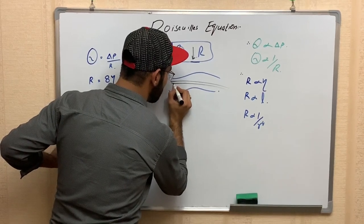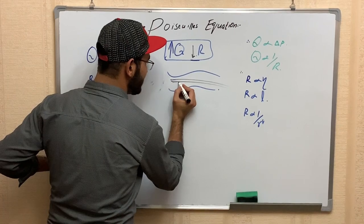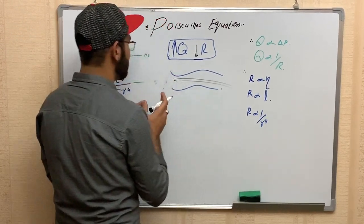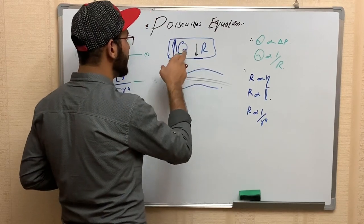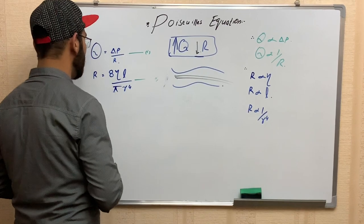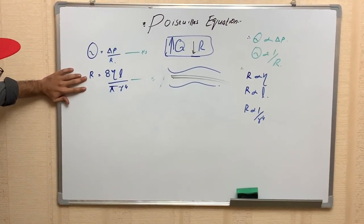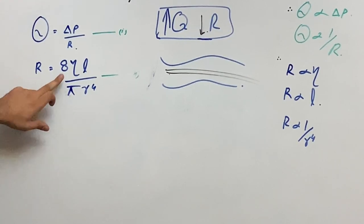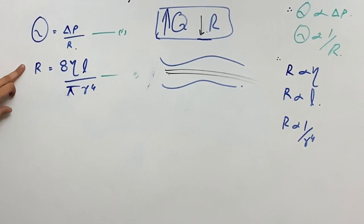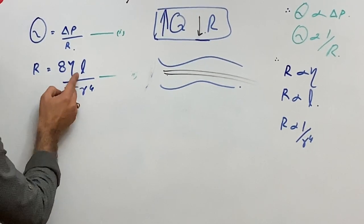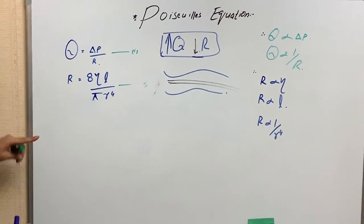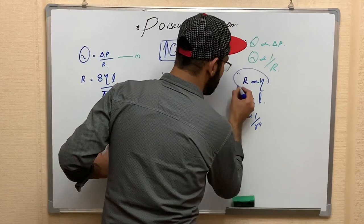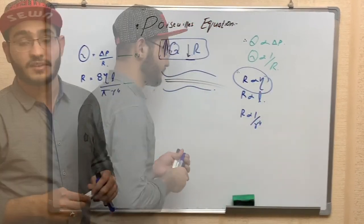Now, looking at resistance itself: resistance is directly proportional to viscosity. If we double the viscosity, resistance will also double, and if we double the length, resistance also doubles. However, resistance is inversely proportional to radius. We will now discuss resistance and viscosity further.